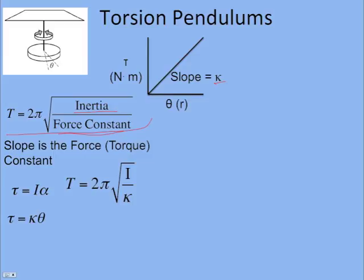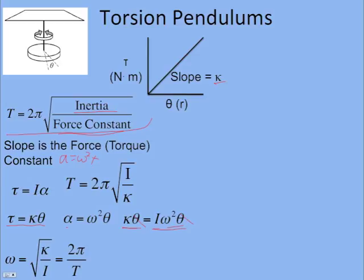Since torque equals I·alpha, the torque is kappa·theta — that's the equation of the line, tau kappa theta. From the physical pendulum analogy, just as acceleration equals omega-squared times x, alpha equals omega-squared times theta. Substituting both sides, we get torque equals I·alpha, the theta cancels, and we can solve for omega: omega equals the square root of kappa over I, which equals 2π over the period.